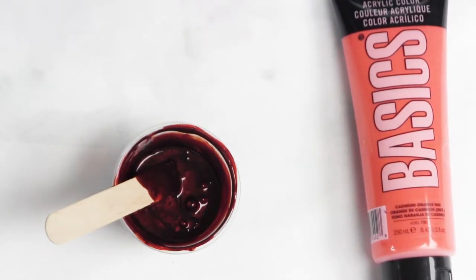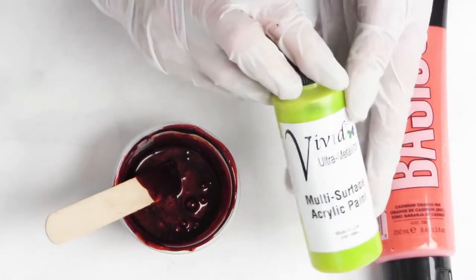When we started promoting the primary elements for paint pourers, we already had made a product called Vivid. You're using the clear enamel to make your own paints, but the Vivid is a pre-mixed paint.